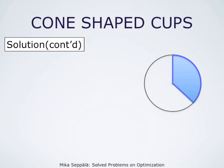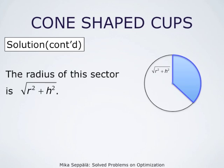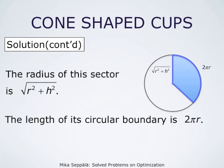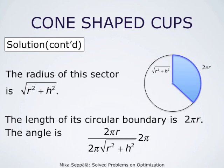We have flattened our cone to a sector of a disc. The radius of this sector is square root of r squared plus h squared, and the length of the circular boundary of this sector is 2 times pi times r. Therefore, the angle measured in radians is the length of the circular boundary, 2 times pi times r, divided by the length of the circle of radius square root of r squared plus h squared, that is 2 times pi times r divided by 2 times pi times square root of r squared plus h squared, times the full angle, which is 2 pi.